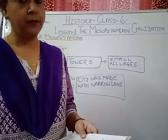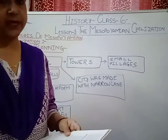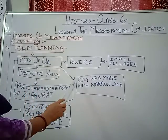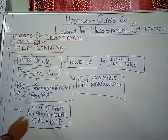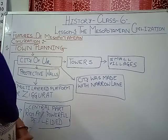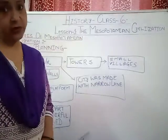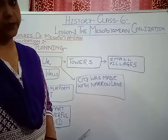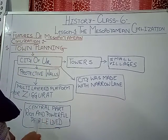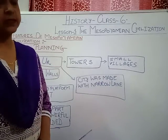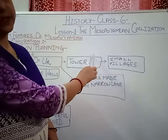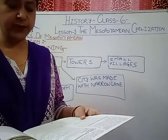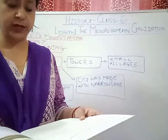The city of Ur was protected by walls all around it. The city was made with narrow lanes and had multi-layered platforms called ziggurats. In the center of the town was the temple area where their gods dwelt, and the priests and kings were the high-ranking people of that time. There were also towers and small villages surrounding the city.